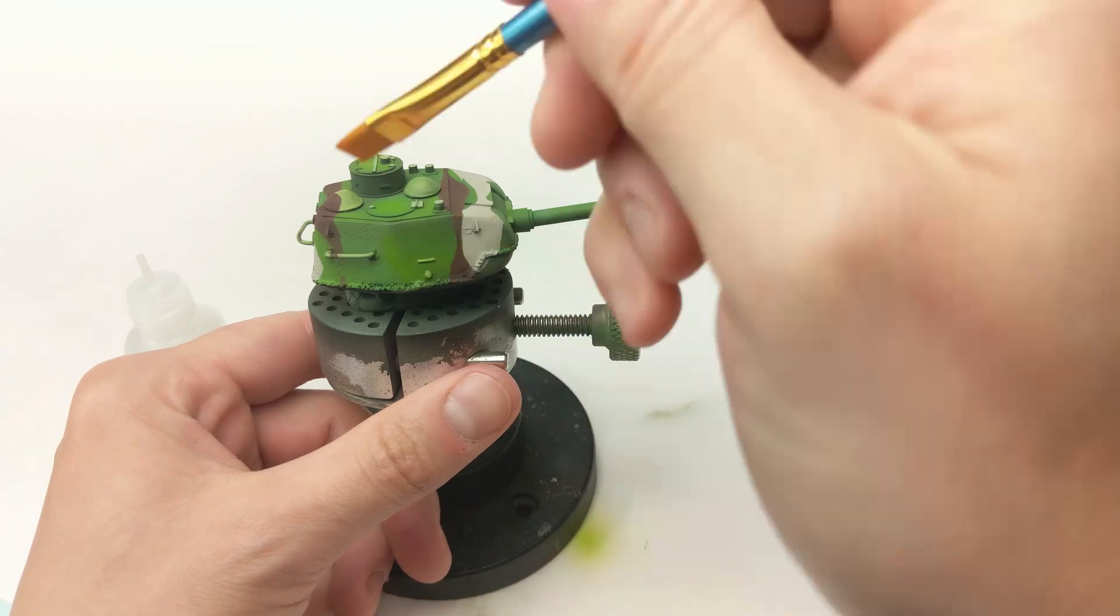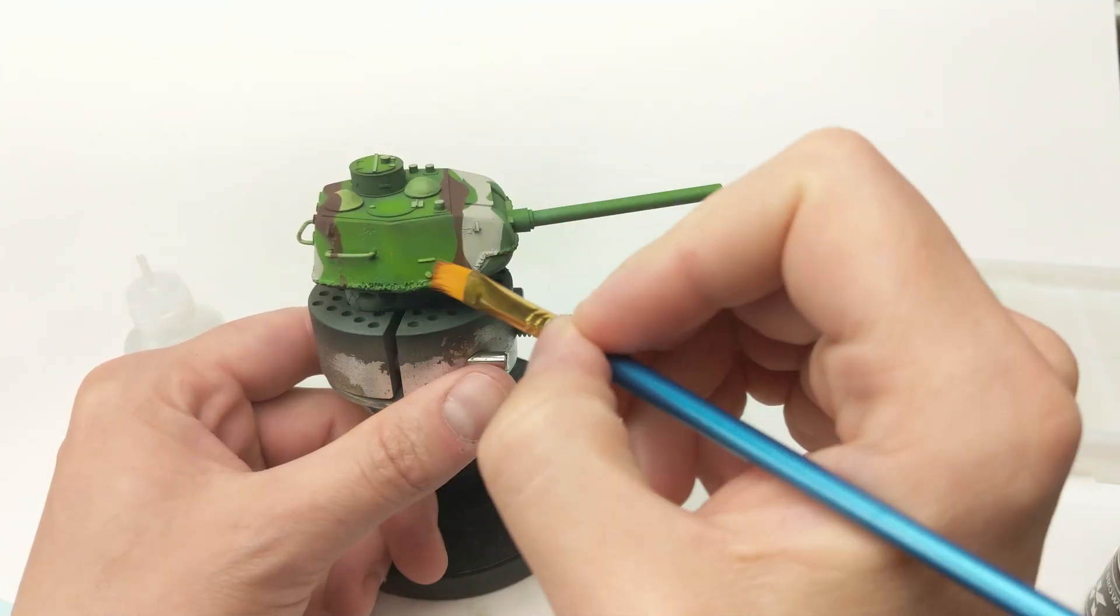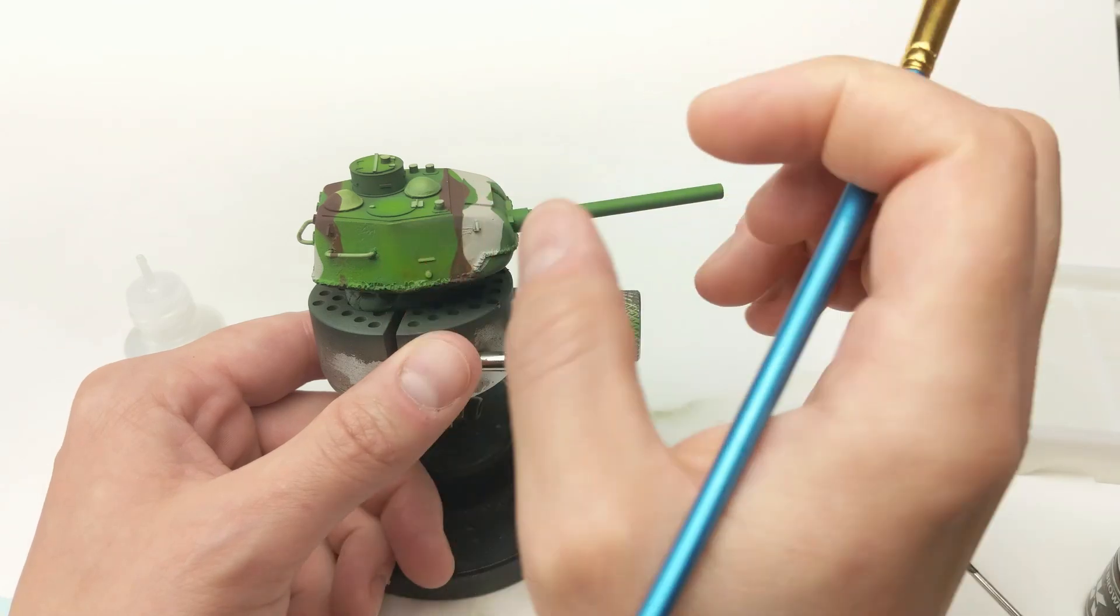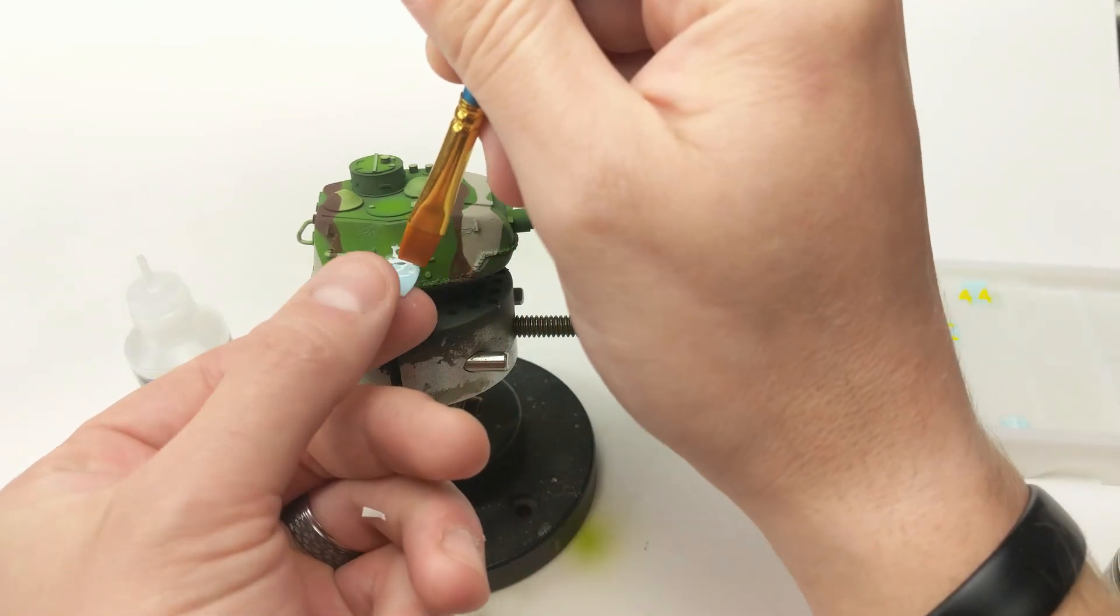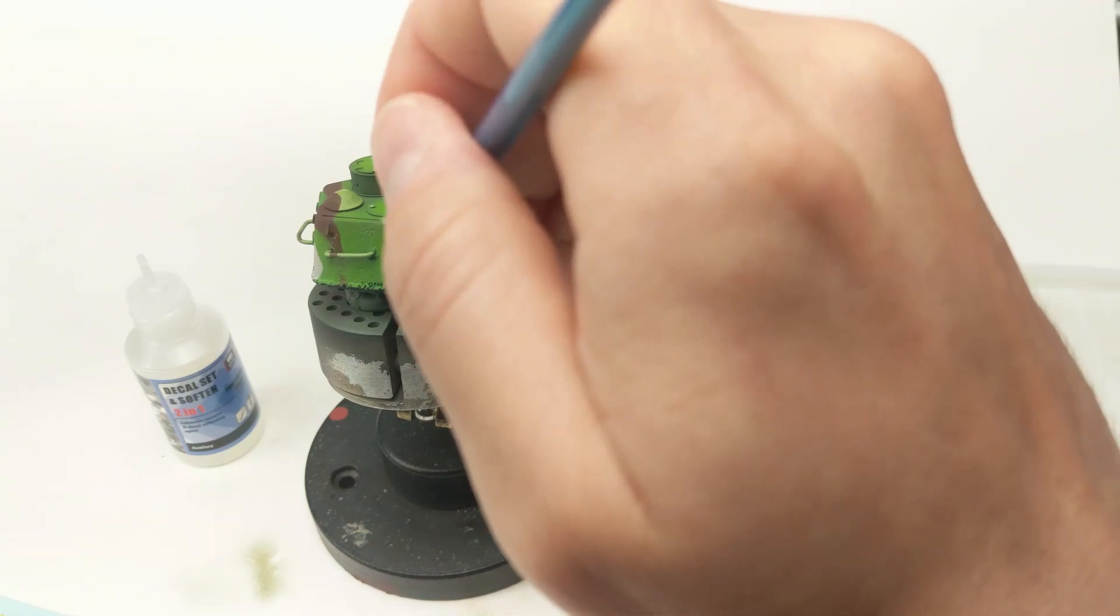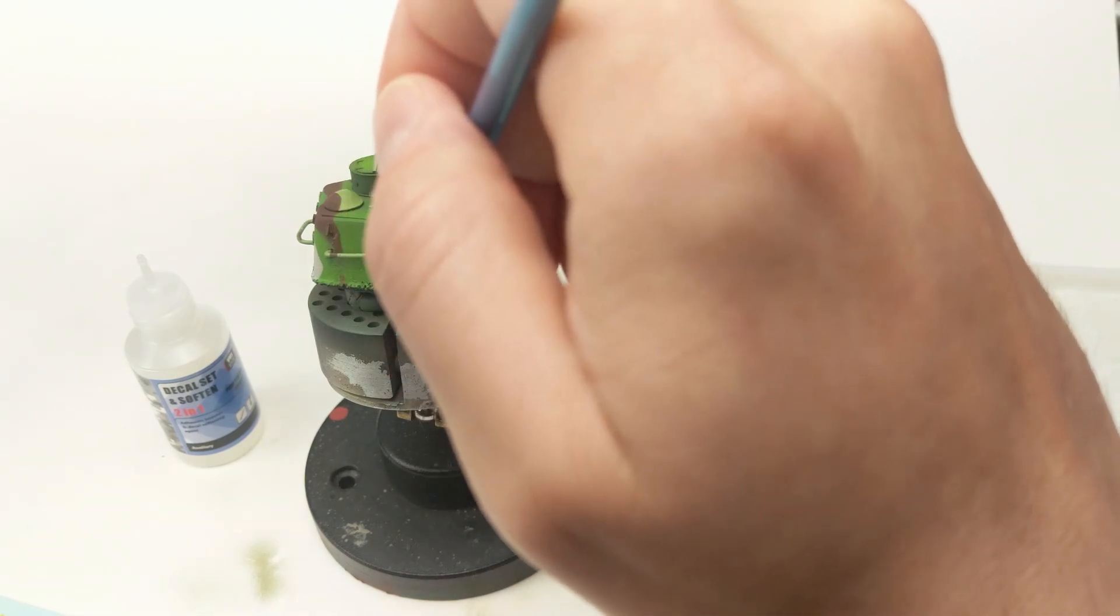Prior to applying the decal, I went and applied the VMS set and soften onto the coat of the paint area that I wanted to put the decal on. At that point, I just teased it with the brush, making sure to flatten it and let the set and soften do its magic.